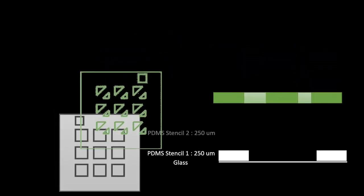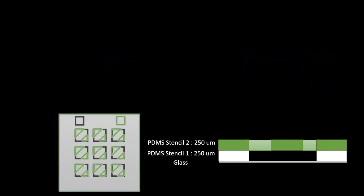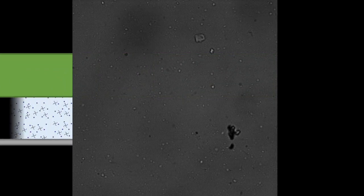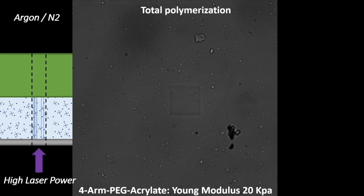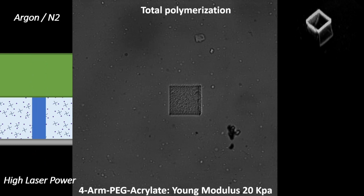Our PDMS micro-reactor comes from the stacking of two PDMS stencils, which can be found on the Alveol website. This creates a reactor with a gas-permeable interface on the ceiling. We can subsequently incubate hydrogel prepolymers and photoinitiators inside the chamber. In a first engineering operation, argon is perfused to polymerize up to the ceiling. This is total polymerization, and it is useful to create hydrogel barriers.